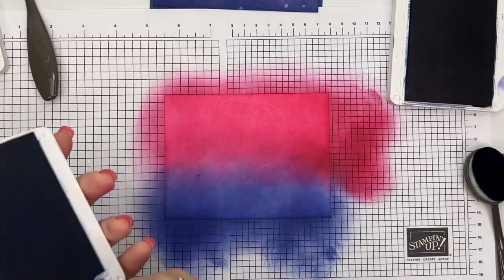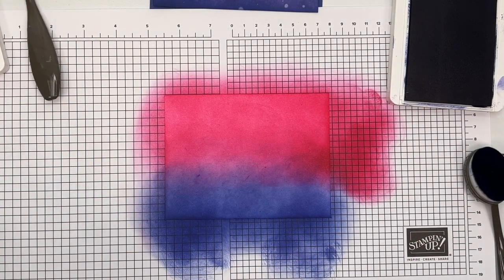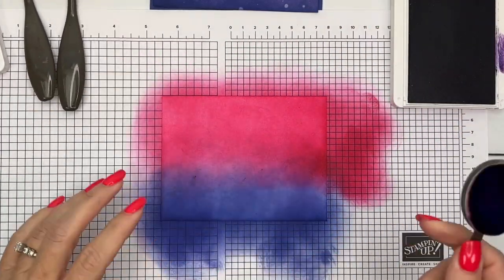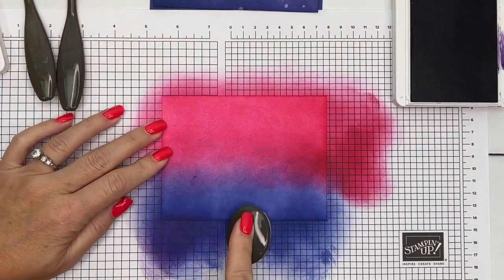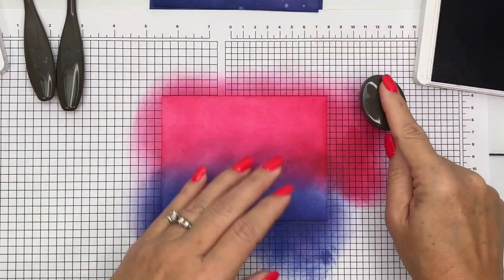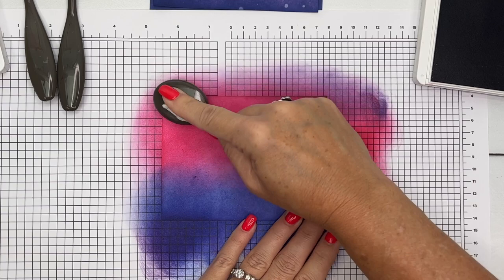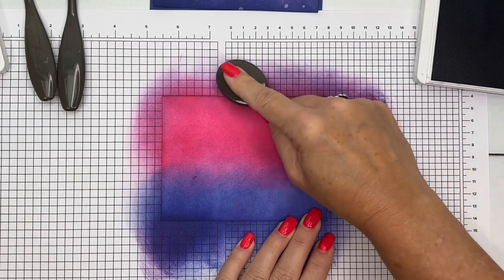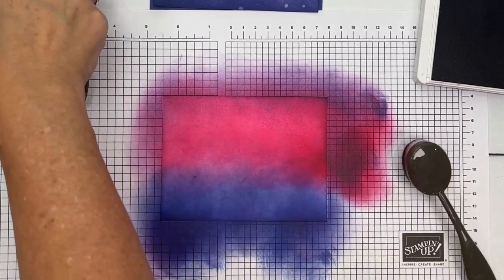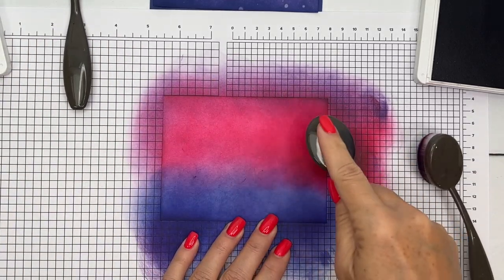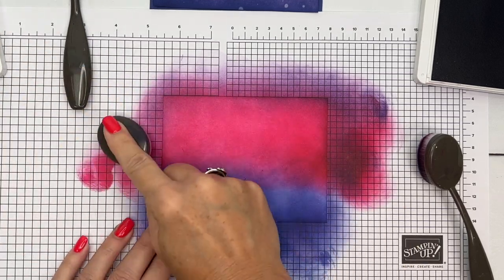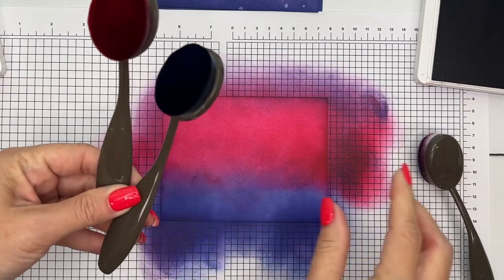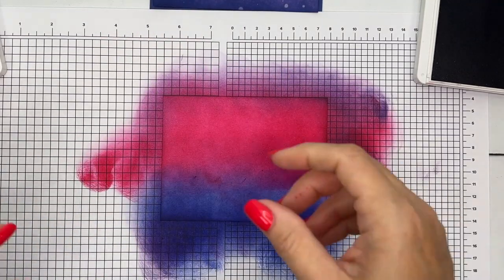Now, last but not least, I'm going to take Gorgeous Grape and I'm going to use my purple blending brush and I'm going to go around the edges, both on the bottom and the top. Now, go light on the top because it is very dark. Okay, I think we've reached the point where we need to stop. This is Melon Mambo again. Melon Mambo just takes those colors and just kind of smooths them all together.